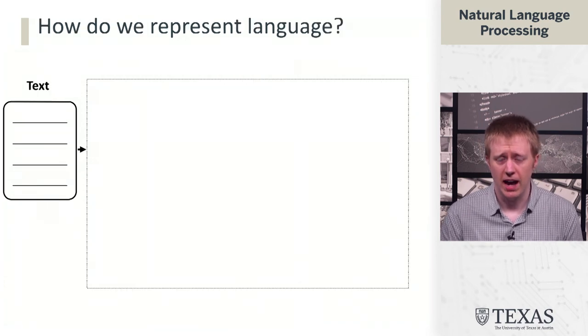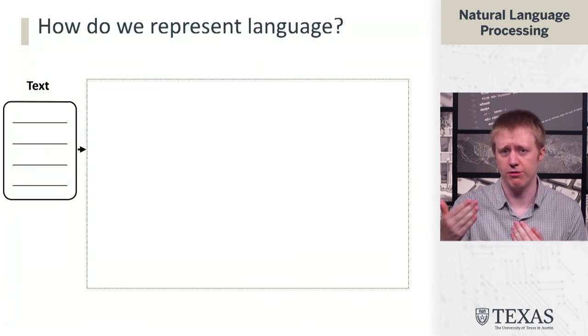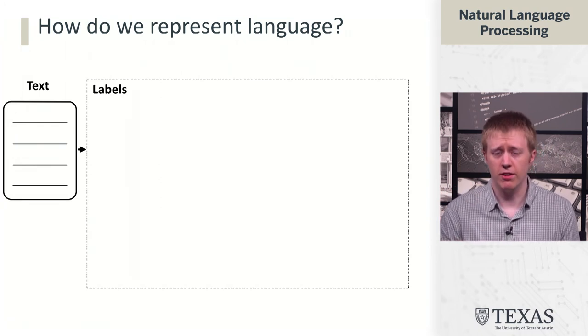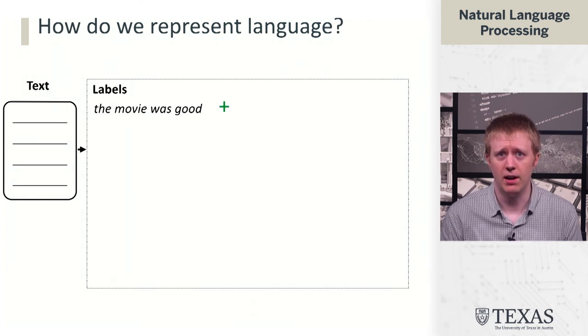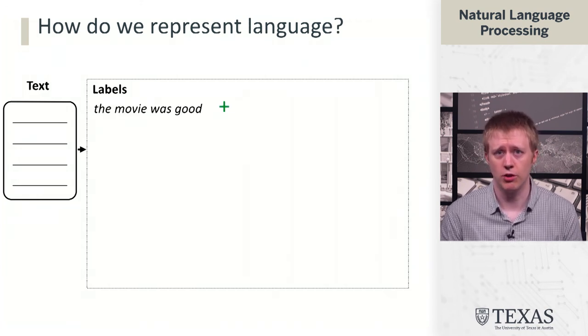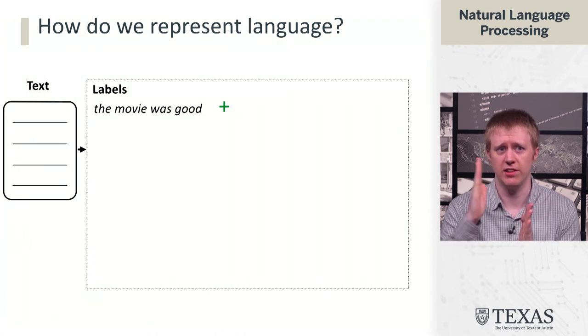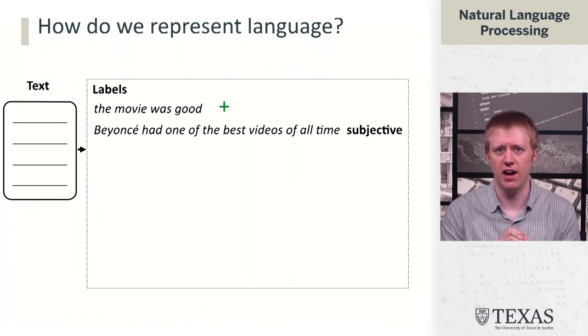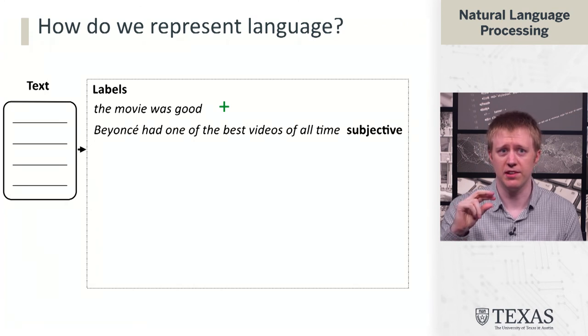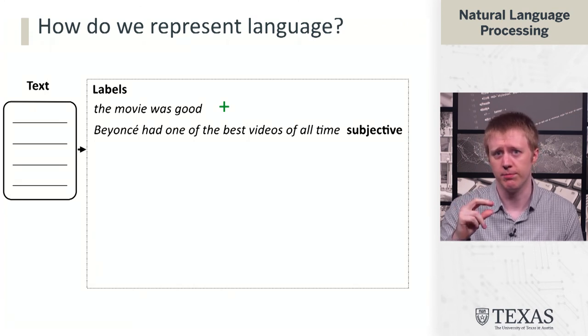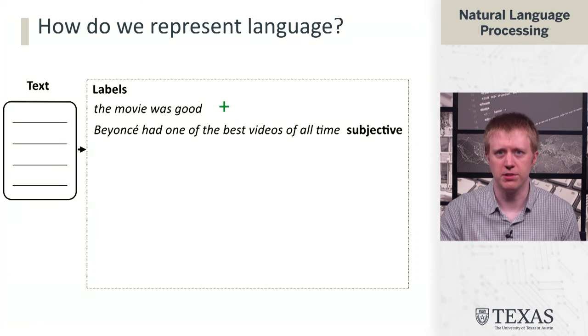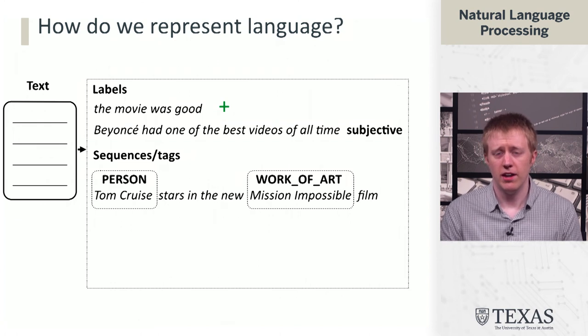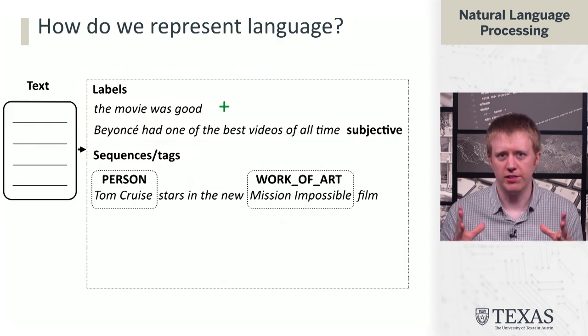Let's talk about how we represent language. In this text analysis piece, what do these representations look like? We're going to start off the course by thinking about labels. For example, if we say 'the movie was good,' it's going to have a discrete sentiment label that says this is positive sentiment. We might have a statement like 'Beyonce had one of the best videos of all time.' This is subjective. We might classify statements as subjective versus objective. There's a whole bunch of other different types of labeling schemes we might use.